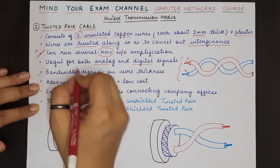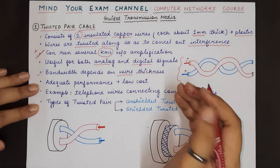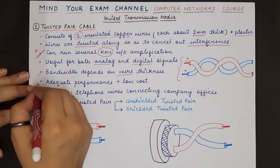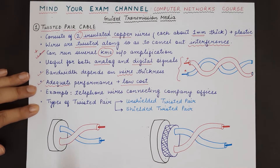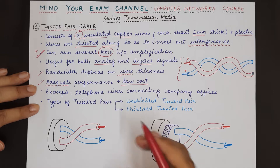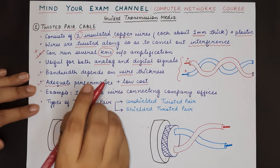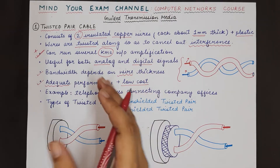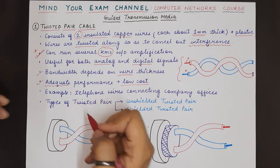The cable can carry both analog and digital signals. The bandwidth offered by the twisted pair cable depends on the thickness of the wire — a higher thickness wire will lead to a slight increase in bandwidth. Twisted pair cable offers good performance along with low cost. Copper is not very costly, so the overall cost of using this cable for transmission comes out to be very economical. Good performance with low cost makes twisted pair a favorite among multiple applications.